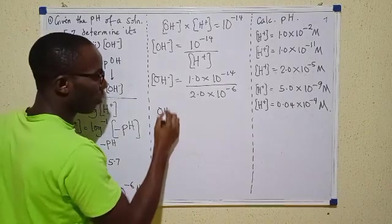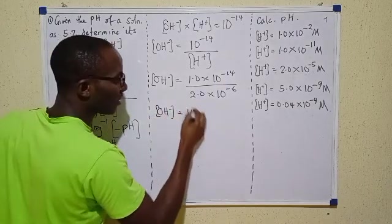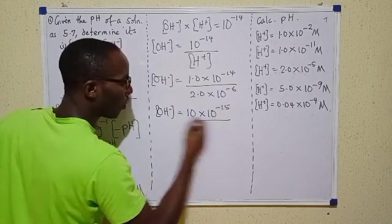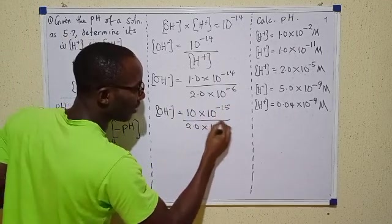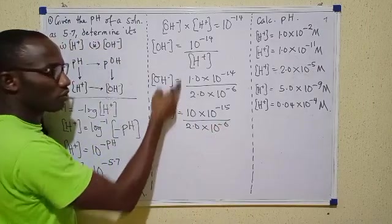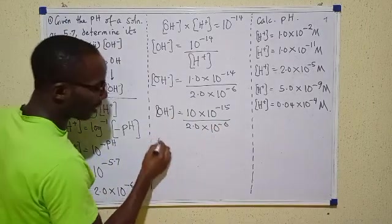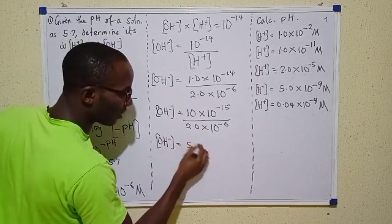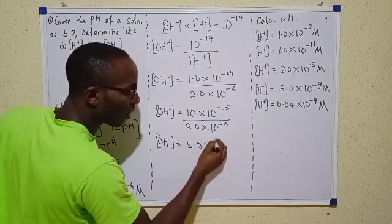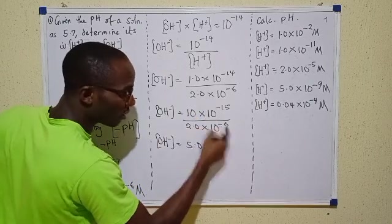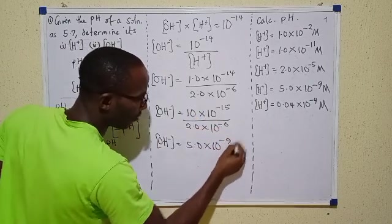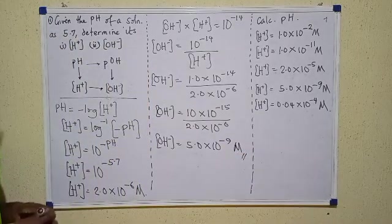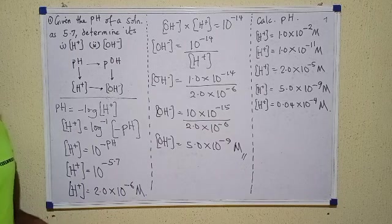Carrying out that division, the OH⁻ concentration becomes 5.0 × 10⁻⁹ — since 10 divided by 2 gives 5, and the powers give −14 + 6 = −9. So we have gotten both H⁺ and OH⁻.